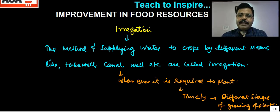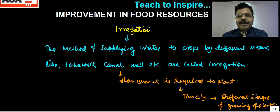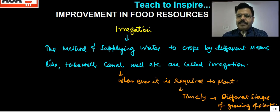Now, sometimes we are doing irrigation and sometimes we are depending on rainy water. We don't want our crops to go without water. Most of the time, farmers are depending upon the monsoon. And monsoon is sometimes timely and sometimes untimely. Sometimes the crop needs water and the monsoon is good, but when the crop doesn't need it, it still rains.